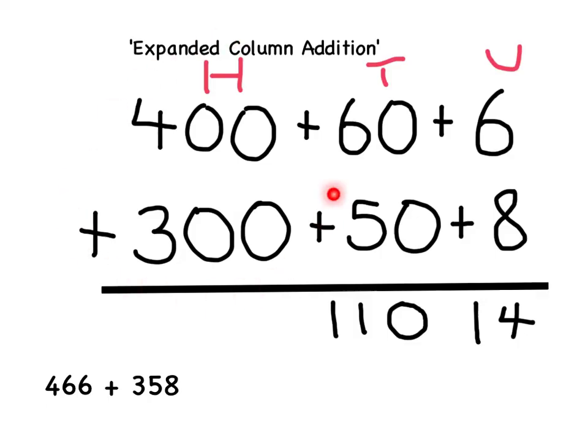And finally, in the hundreds column, we've got 400 add 300, which gives us 700. Now we have to add up all these numbers we've got at the bottom.